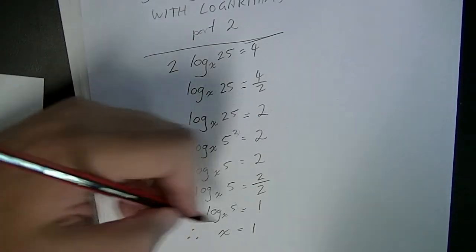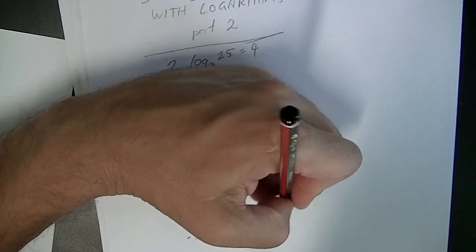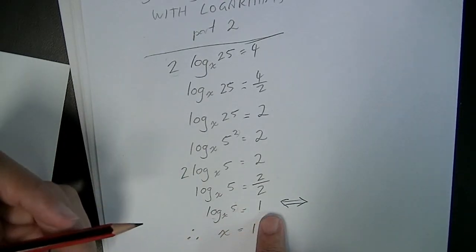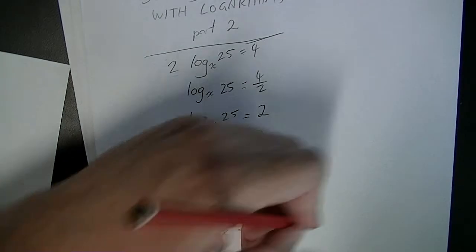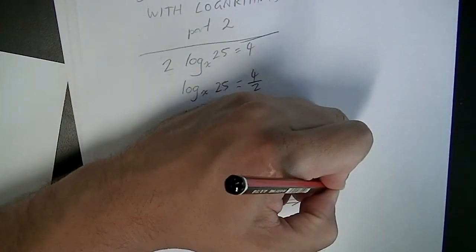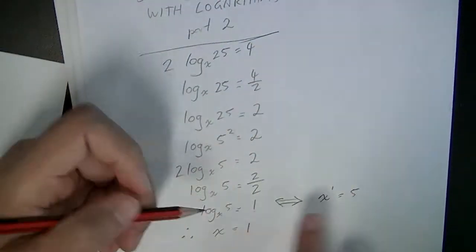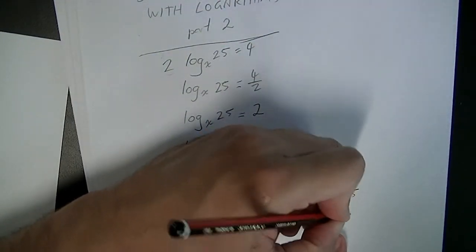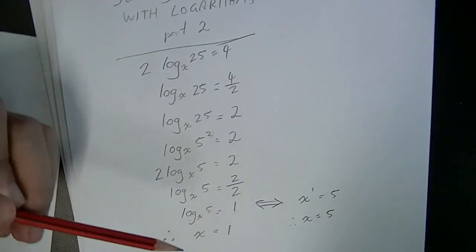An alternative method would have been to write log base x of 5 equals 1 in exponential form, so x to the 1 equals 5, therefore x equals 5, that's the only thing it possibly could be.